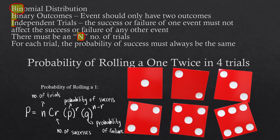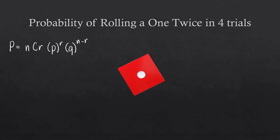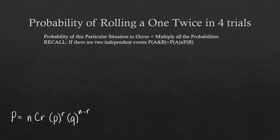In our problem, let's first try to solve this manually. The probability of this particular situation — rolling a 1 twice in 4 trials — is obtained by multiplying all the probabilities. For independent events, we multiply all probabilities to get the probability of the specific situation. Since we have 4 trials, we need to multiply 4 events.